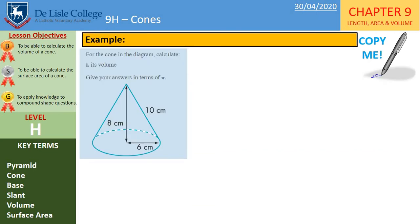So let's look at an example. So we're going to calculate the volume of this cone and we're going to give our answer in terms of pi. So we're going to copy down this example into your books. So you can see here we've got the formula and then we substituted what we know. So we've got a third times pi. We know the radius is 6, so 6 squared is 36 and then times by the height, which is 8.